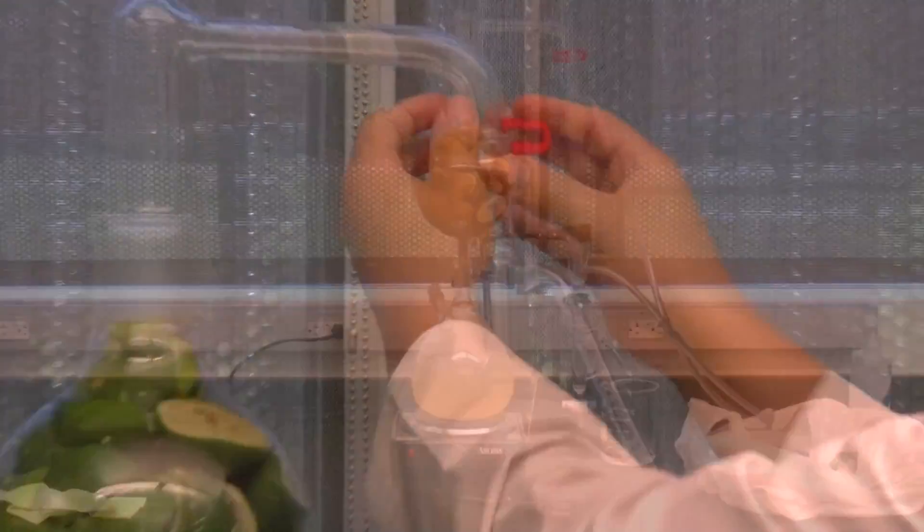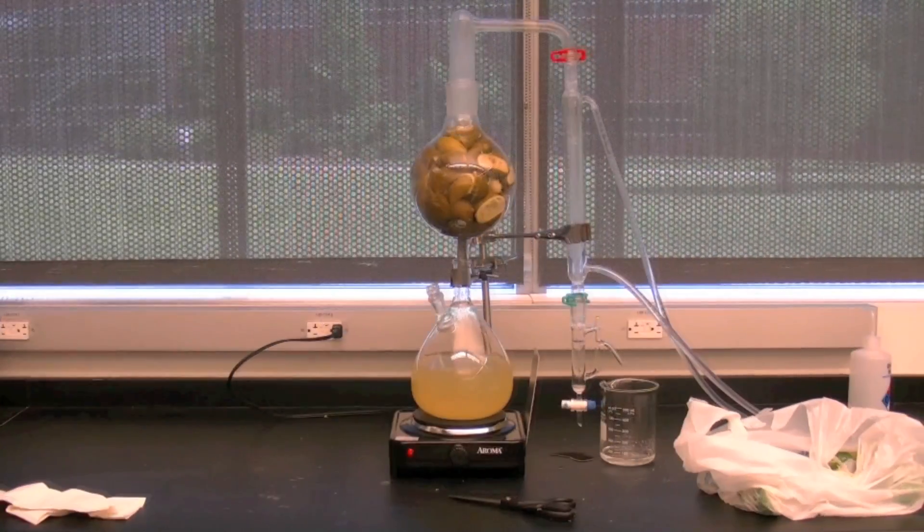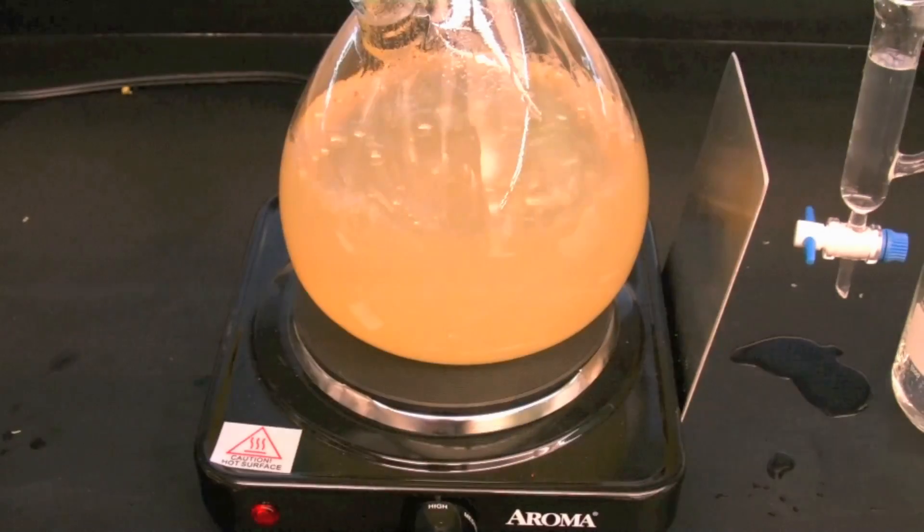Turn on the cold water such that there is a gentle flow of water through the condenser. Plug in the hot plate and turn the temperature to hot.